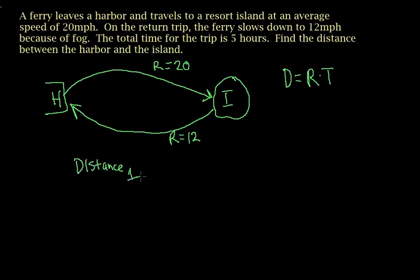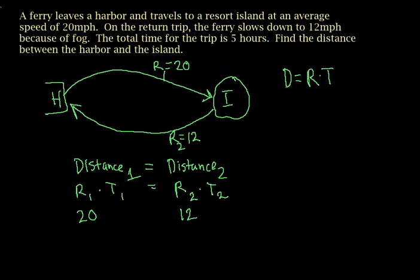Now if you think about it, the distance going, or distance one, is equal to the distance coming back - I'll call that distance two. So rate one is 20, rate two is 12, and we know that distance one equals rate one times time one. So really the equation becomes R1 times T1 equals R2 times T2, and we know that the rates are 20 and 12 respectively, so we got a lot of information already.